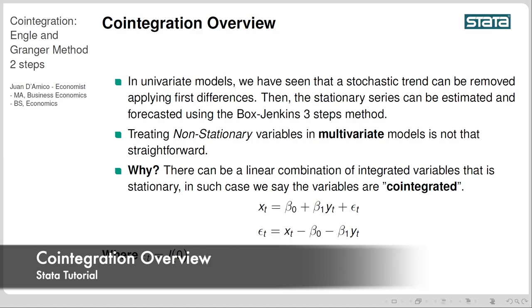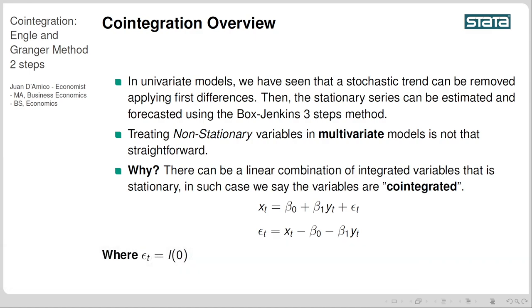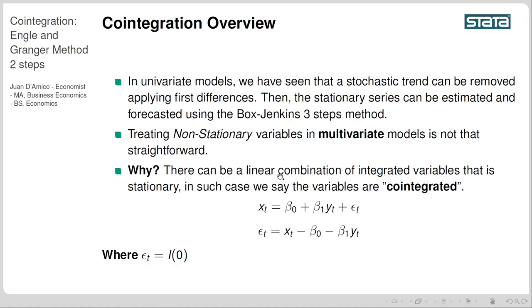In univariate models we have seen that a stochastic trend can be removed by applying first differences, and the stationary series can be estimated and forecast using the Box-Jenkins three-step method. However, treating non-stationary variables in multivariate models is not that straightforward, because there can be a linear combination of integrated variables that is stationary. In such a case we say that the variables are co-integrated.